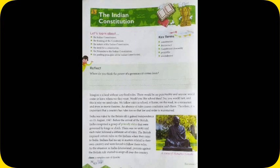India was ruled by the British till it gained independence on 15th August 1947. Before the arrival of the British, India comprised a group of princely states that were governed by kings or chiefs. There was no unity and each ruler followed a different set of rules. The British imposed certain rules on the Indians when they came to India, and Indians had no say in matters related to their own country and were forced to follow these rules.